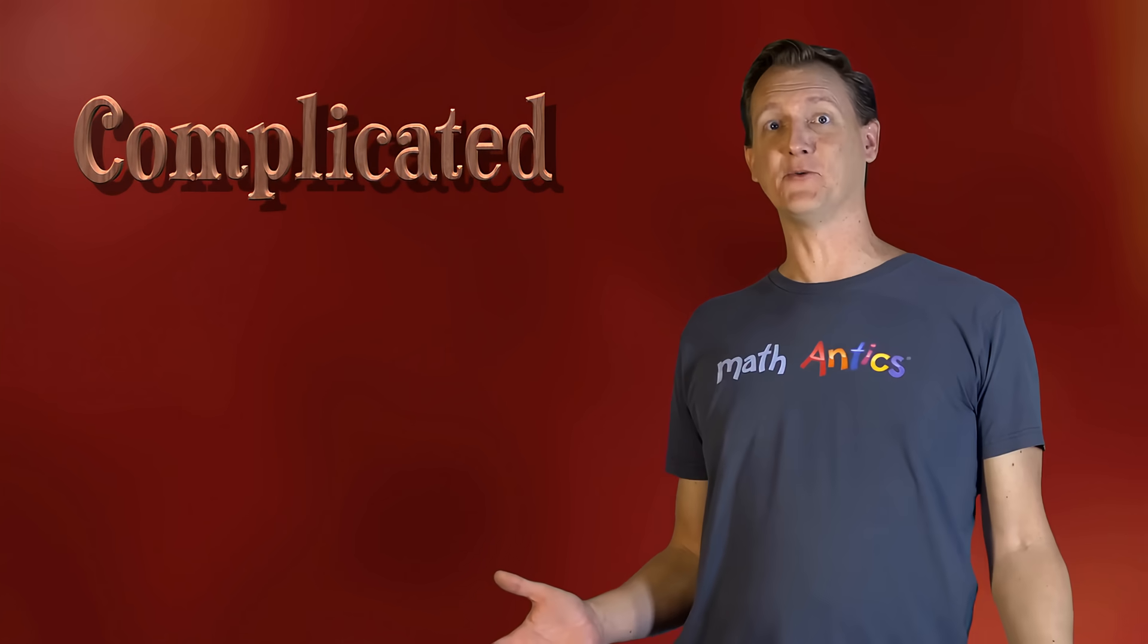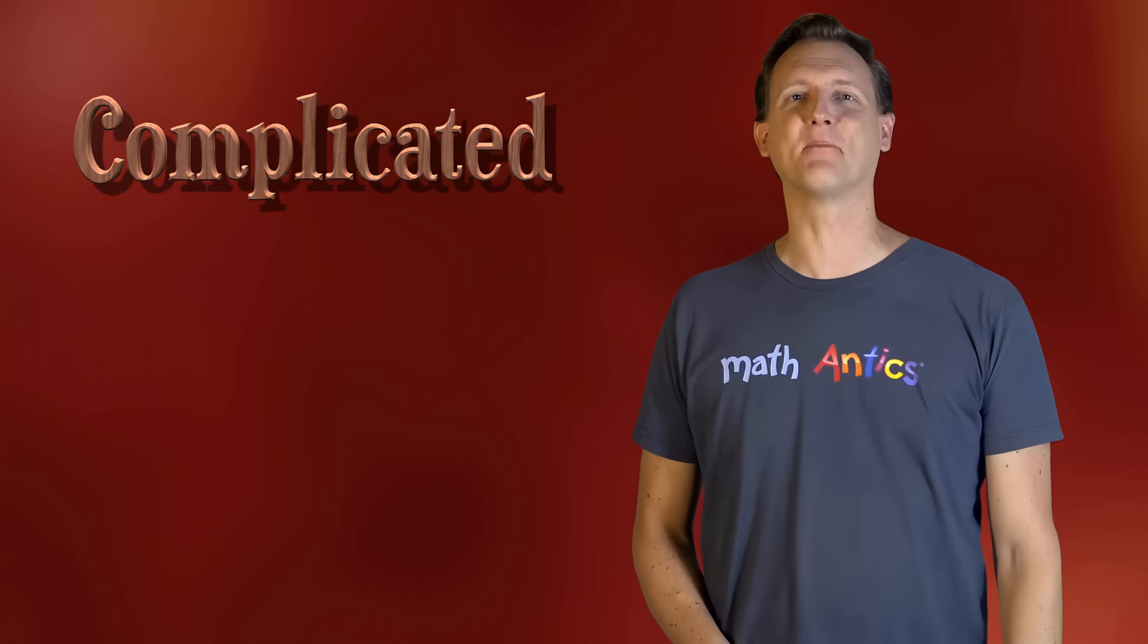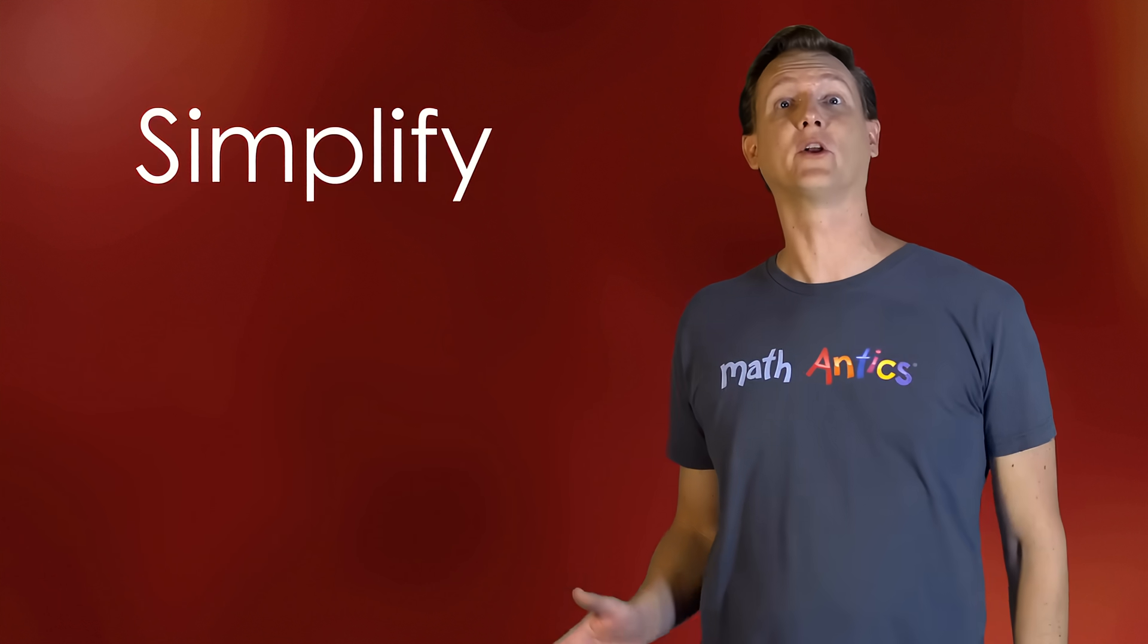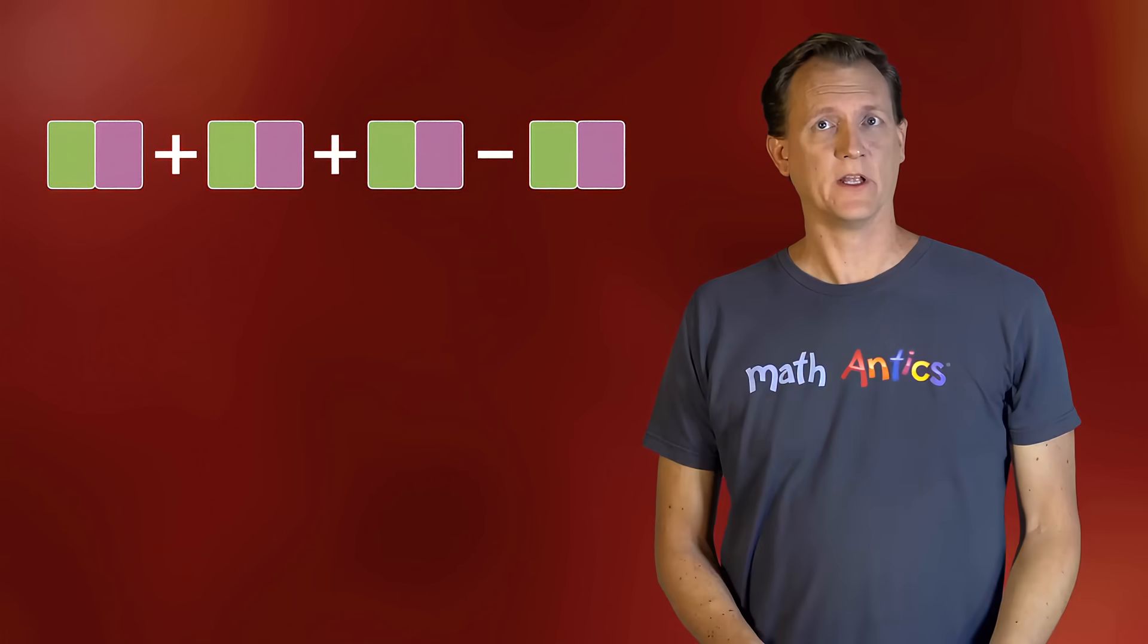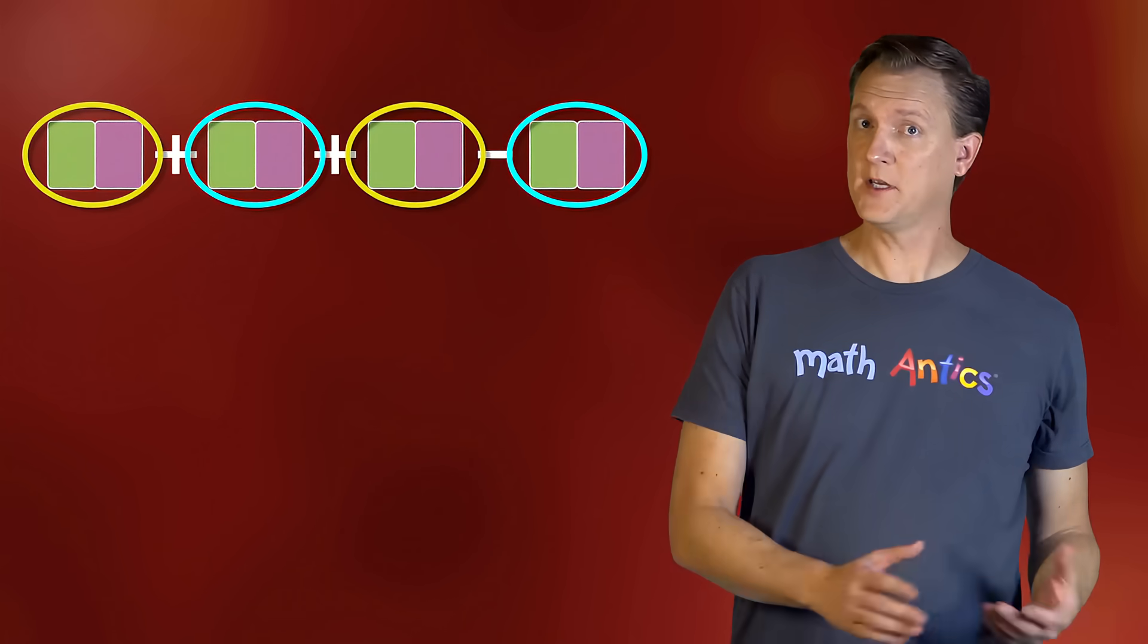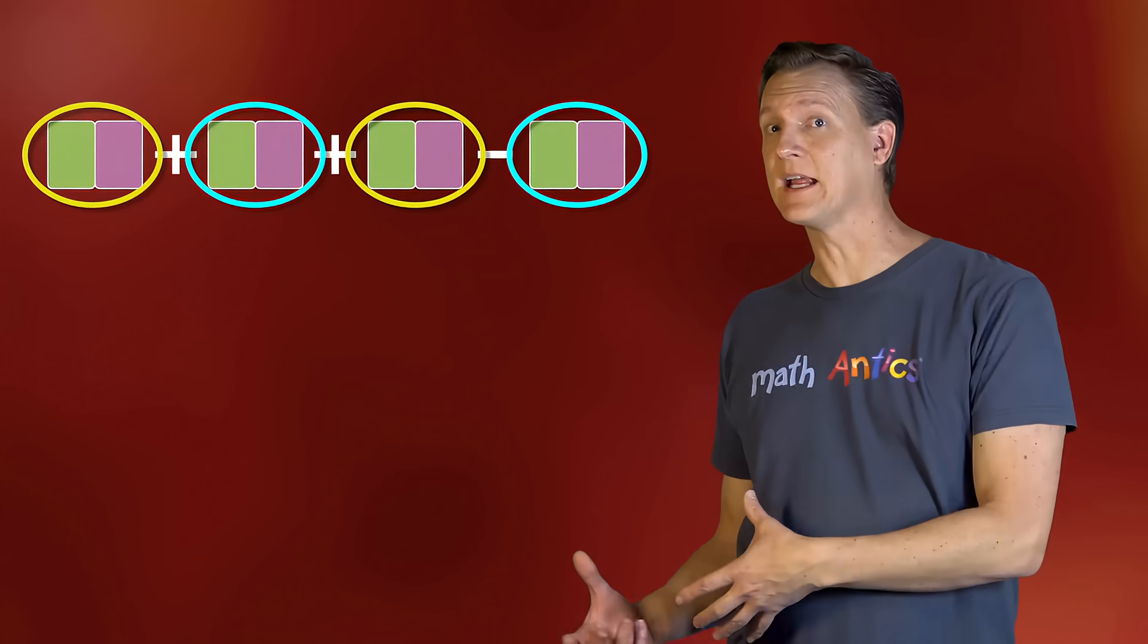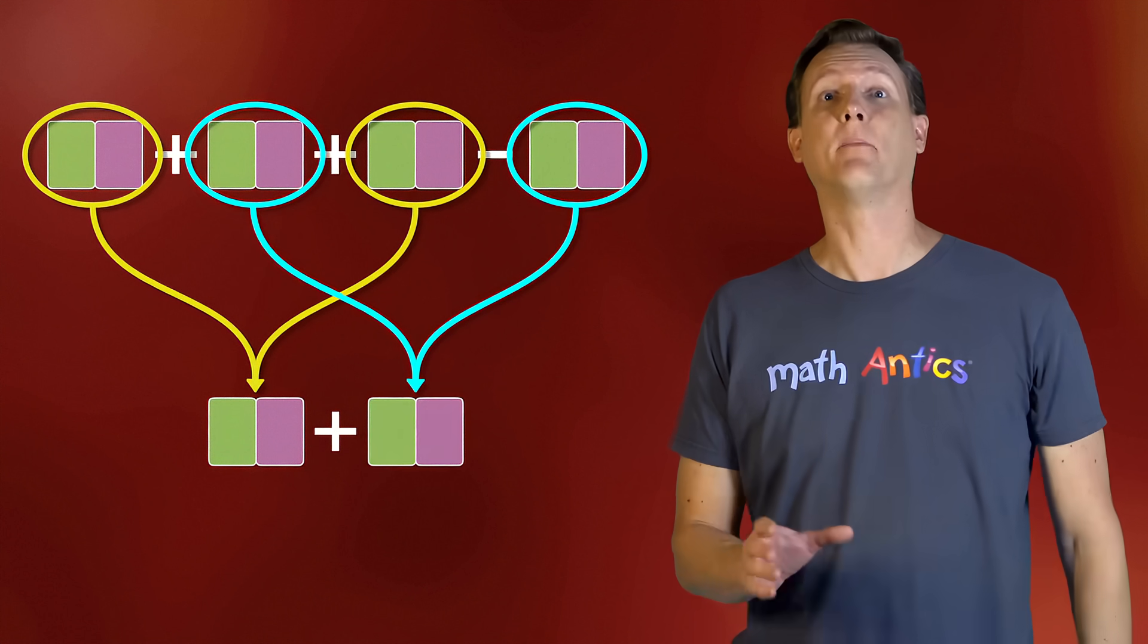But even though the basics of polynomials are pretty simple, sometimes you'll come across polynomials that are more complicated than they really need to be. And in math, what do we like to do when things are too complicated? Yup, we simplify them. So in this video, we're going to learn how to simplify polynomials. Simplifying a polynomial involves identifying terms that are similar enough that they can be combined into a single term to make the polynomial shorter.